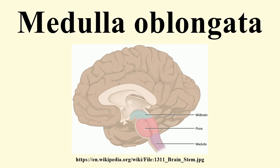Blood supply: Blood to the medulla is supplied by a number of arteries. The anterior spinal artery supplies the whole medial part of the medulla oblongata. The posterior inferior cerebellar artery, a major branch of the vertebral artery, supplies the posterior lateral part of the medulla where the main sensory tracts run and synapse, and also supplies part of the cerebellum. Direct branches of the vertebral artery supply an area between the other two main arteries, including the solitary nucleus and other sensory nuclei and fibers.